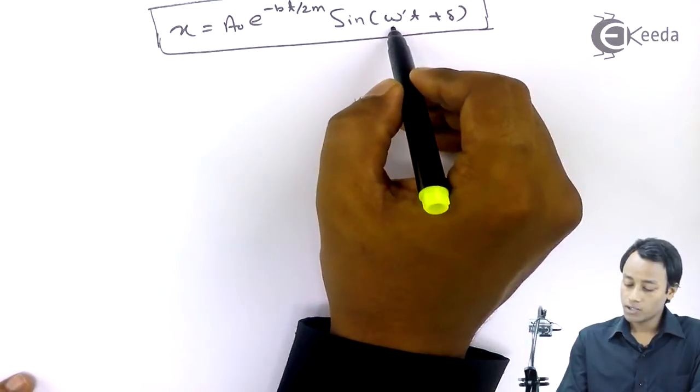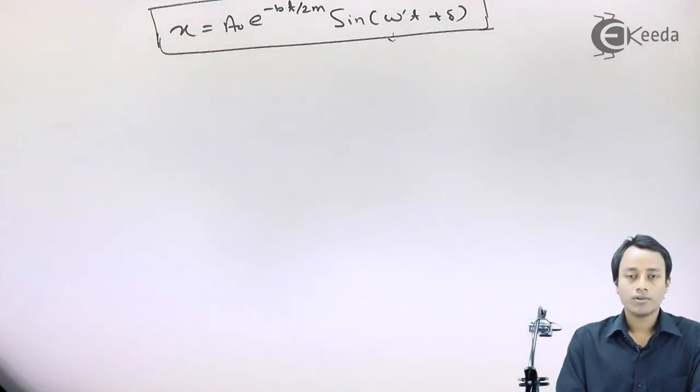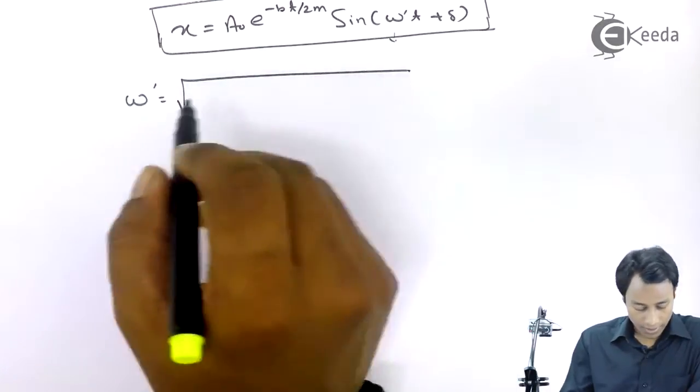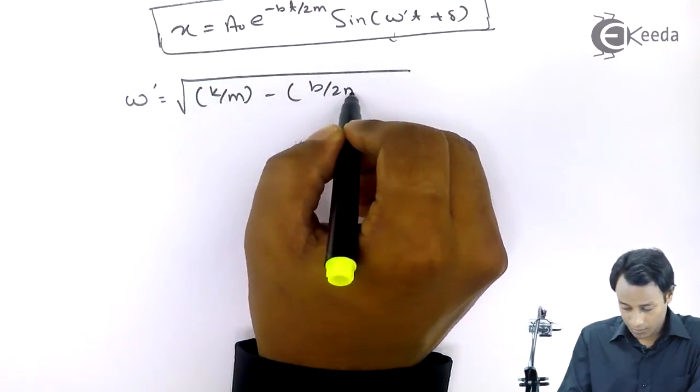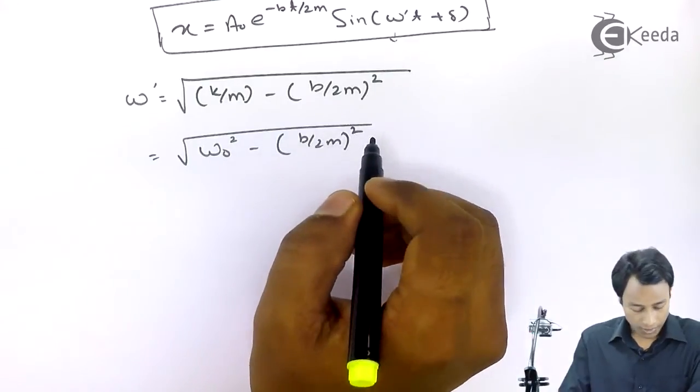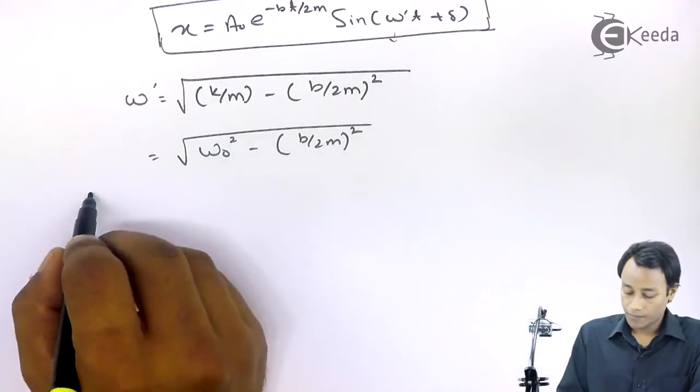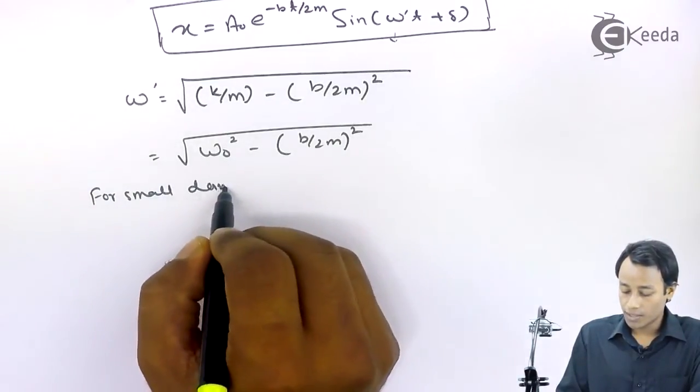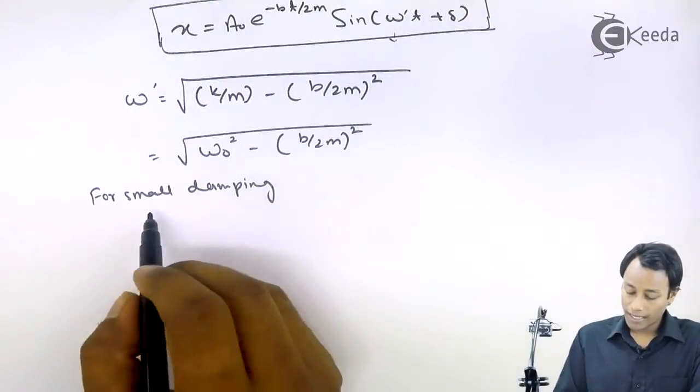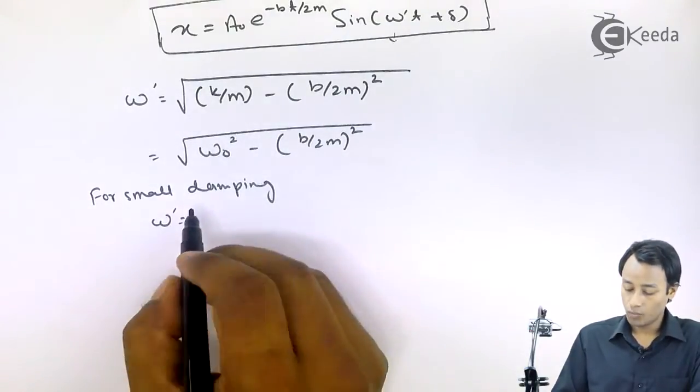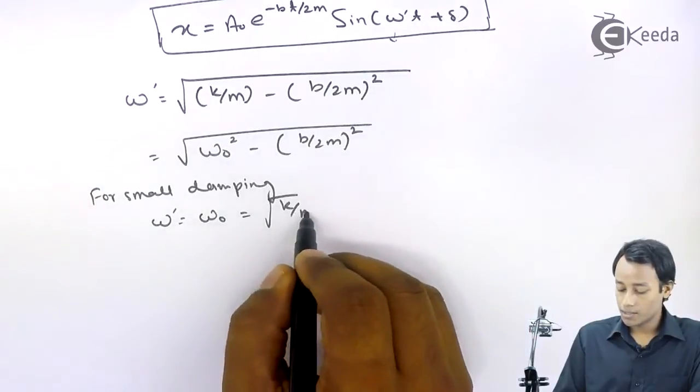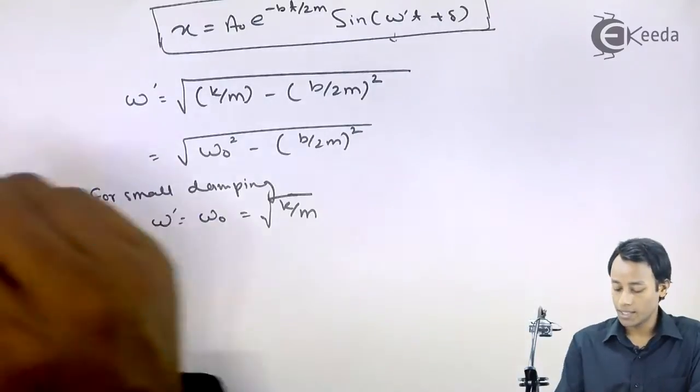So this omega prime you see, this omega prime is the frequency with which the particle is oscillating. And omega prime is this, where k by m is omega naught square minus B by 2m square. If I say that damping is very small, that means for small damping, if we talk about damping factor, that is B. So if damping is very small, then B has to be very small. So for that case, the frequency of oscillation omega prime will be equals to omega naught. That means in that case our system, it oscillates almost with natural frequency. That is k by m.